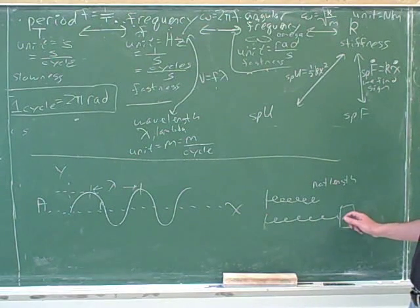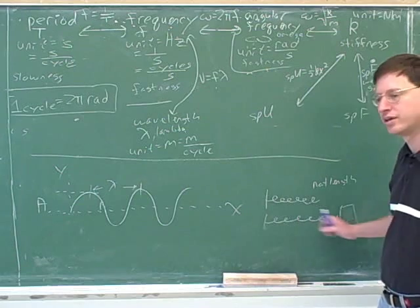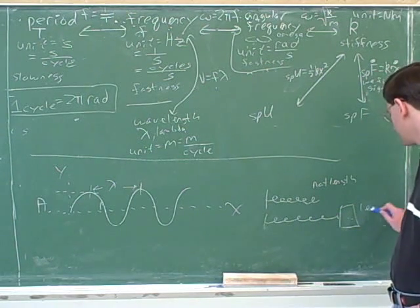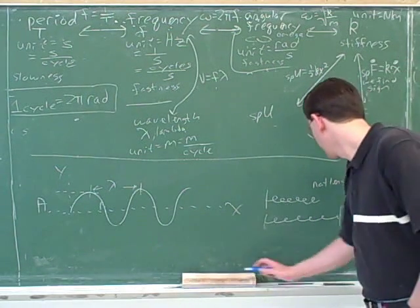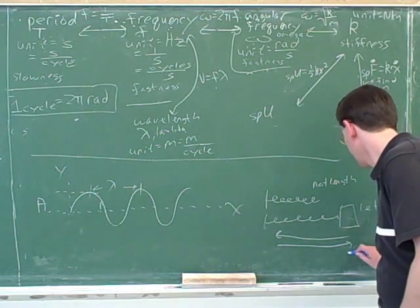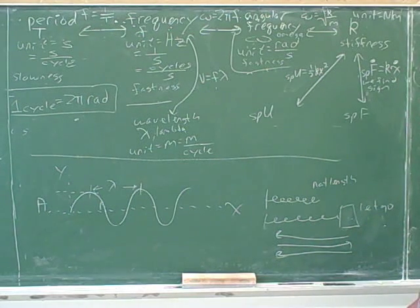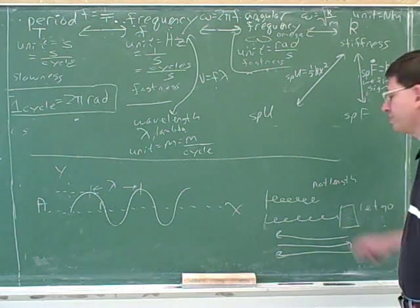Now, if I expand the spring and let it go, we know it's going to start oscillating back and forth. So let's say I let go of it over here. Then it's going to move to here. And then move back. And then move back. And I keep oscillating like this. So which distance is the amplitude here?